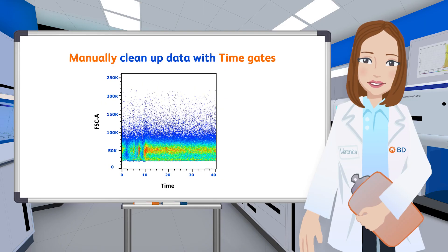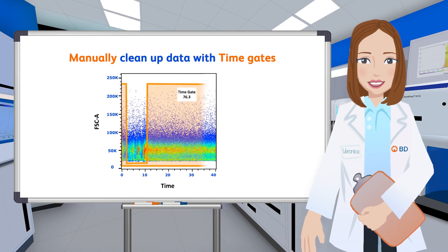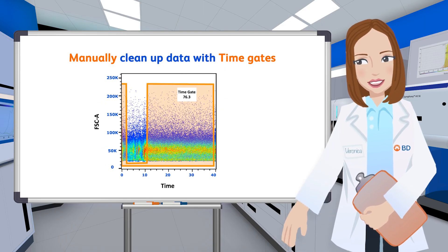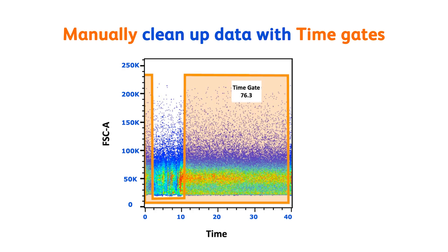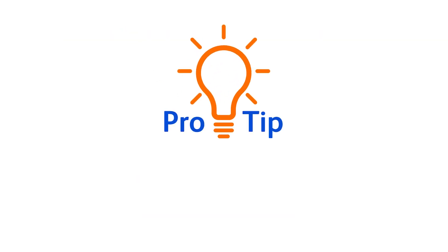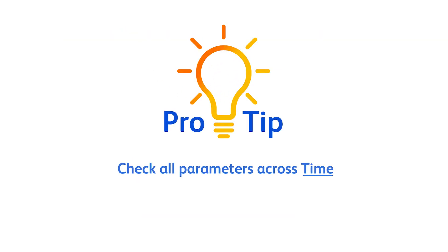For a manual approach, a time gate can be used to exclude events collected during unstable periods of acquisition. Events within your time gate can then be used for downstream gating. Pro tip: for a completely comprehensive manual cleanup, you would need to check all parameters across time.